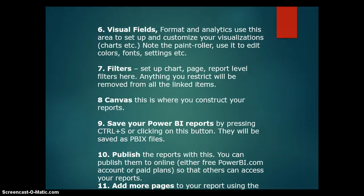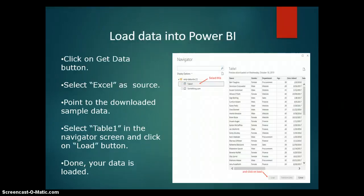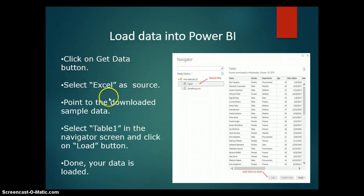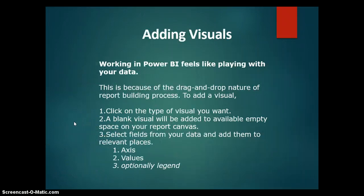Now, how do you get data into Power BI? As mentioned earlier, you click on the Get Data button, then select Excel as a source if your data is in Excel. You then point to your downloaded sample data file and it will load your data into Power BI.